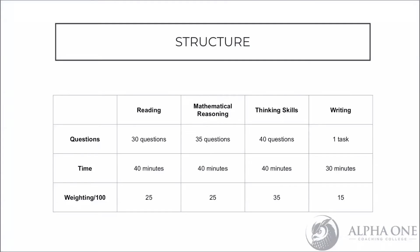We can start with the structure of the individual sections of the paper — the number of questions, the time allocations, and the weighting of each section as it appeared in this year's test. As mentioned, hopefully you've watched our Reading, Mathematical Reasoning, and Thinking Skills review sections. The writing section has the lowest weighting of all four papers, but 15% is still not a number we can take lightly.